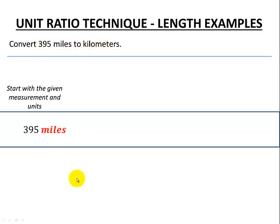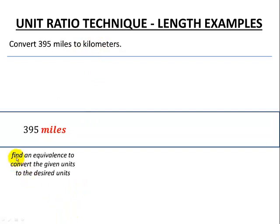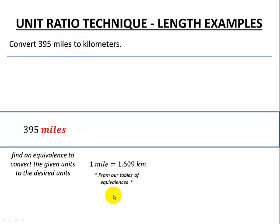Now we want to switch that to kilometers. We're going to have to find an equivalence either from our tables or the internet. For our courses it's predominantly going to be from tables that will convert our given units into our desired units. So we'll look for a conversion factor for miles to kilometers. From our tables we can see that one mile is equivalent to 1.609 kilometers.